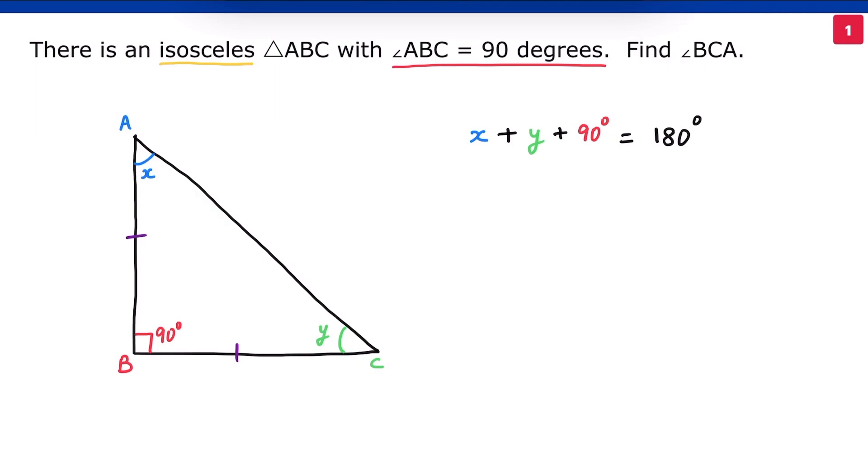Angles opposite to equal sides are equal. So X equals Y.